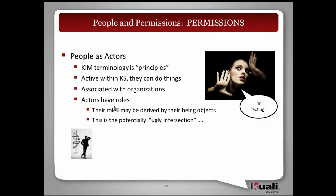Turning to permissions — starting with people as actors, meaning what can they do, and how we're going to let them do it. KS will leverage KIM and KROD in the RICE modules. Actors in KIM are called 'principles.' They could be associated with organizations — a college or a department — and actors may have roles. An actor can have multiple roles and they can change over time. These roles might be assigned manually, but they can also be derived by a person being an object. This is a potentially complex intersection that we'll be working through in the coming weeks and months.